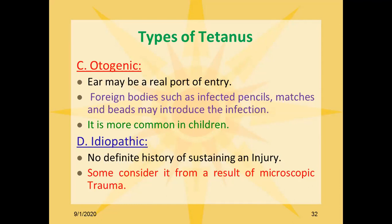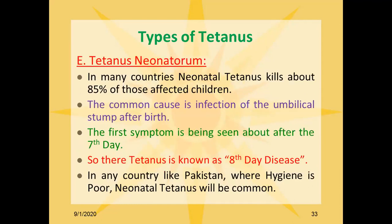The fourth type is idiopathic tetanus, in which no cause is identified and there is no definite history of injury; some consider it a result of microscopic trauma. The fifth type is neonatal tetanus. In many countries neonatal tetanus kills about 85 percent of those affected children. The common cause is infection of the umbilical stump after birth. The first symptoms are seen about the seventh day, which is why this disease is also known as the 'eighth day disease.' In countries like Pakistan where hygiene is poor, neonatal tetanus is very common.